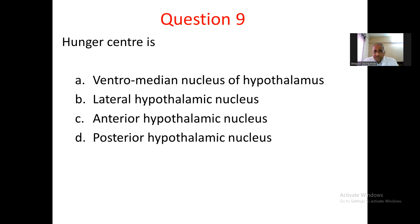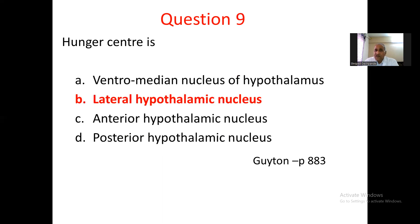Question number 9. The hunger center is: A. ventromedian nucleus of hypothalamus, B. lateral hypothalamic nucleus, C. anterior hypothalamic nucleus, D. posterior hypothalamic nucleus. The lateral hypothalamic nucleus is the feeding center or hunger center. The ventromedian nucleus is the satiety center. The anterior and posterior parts participate in different functions. Hence the answer is B. lateral hypothalamic nucleus — Guyton page 883.